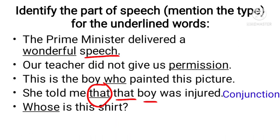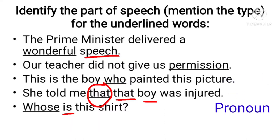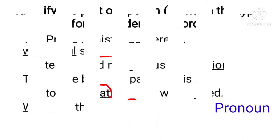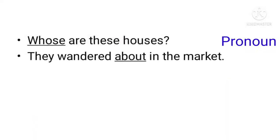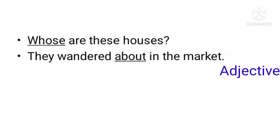'Whose is this shirt?' — here 'whose' is an interrogative pronoun. 'Whose shirt is this?' — here 'whose' is an adjective because a noun follows it. 'Whose are these houses?' — again pronoun. 'They wandered about in the street' — here 'about' is an adverb, but in other sentences 'about' can be a preposition.